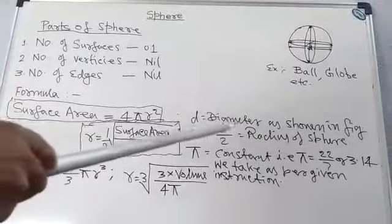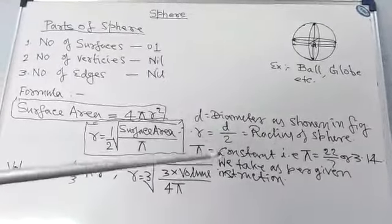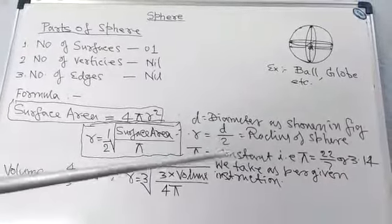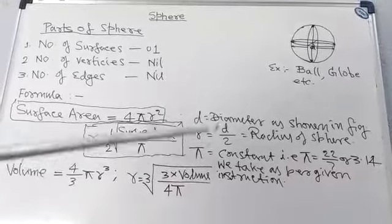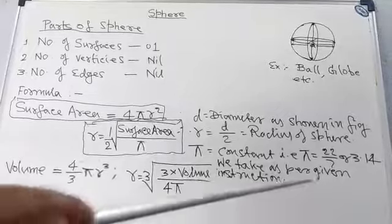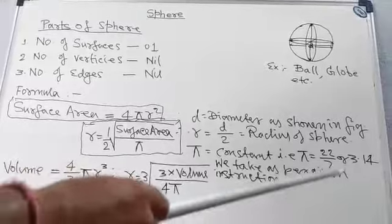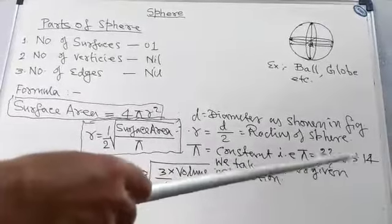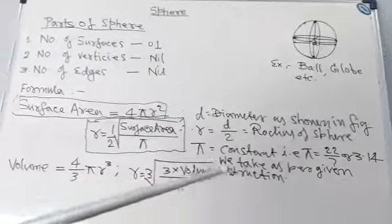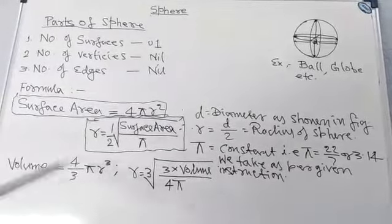One thing to remember: d is equal to diameter as shown in the figure, and r is equal to d/2, radius of the sphere. Because the radius is always the half of the diameter. And π is the constant. That is, π is equal to 22/7. It is the rational number. And π = 3.14, it is given as a decimal number. We take as per the given instruction.